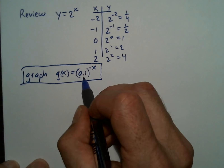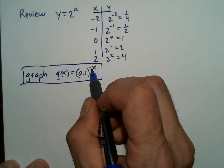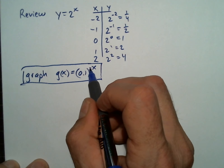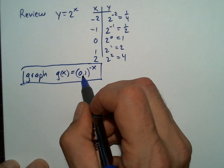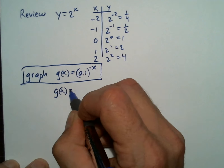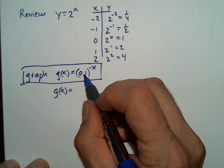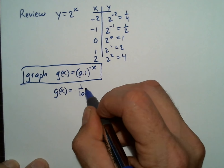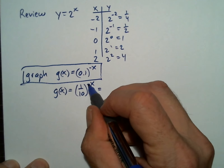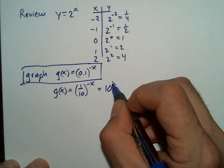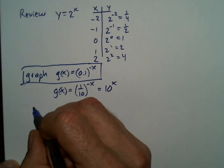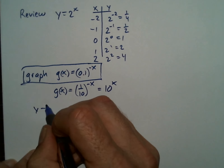So if you have a decimal or a negative exponent, let's rewrite this without the negative and without the decimal — I think it's easier to see what's happening. We'll write that as one-tenth to the negative x, and then the negative means 10, so it's really just 10 to the x. Let's use this format.